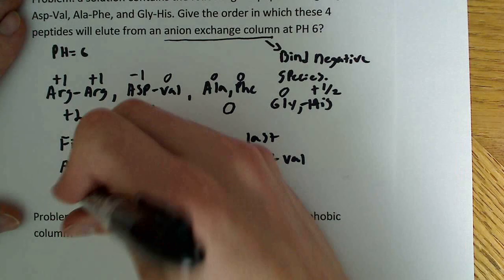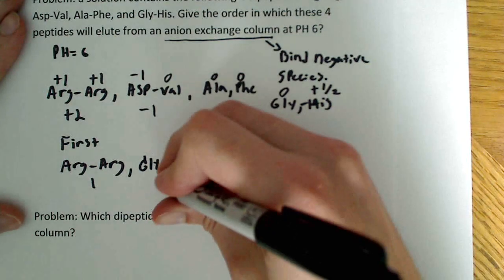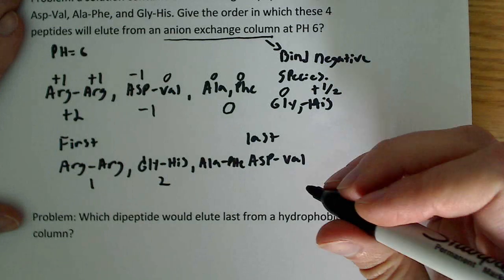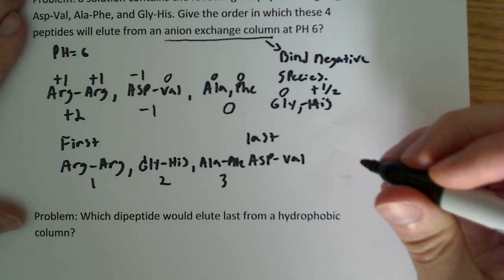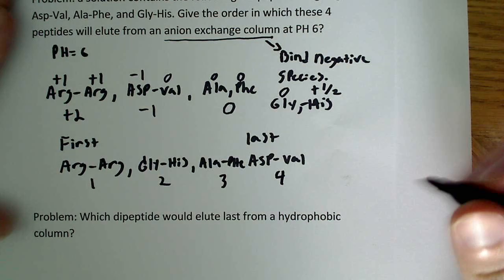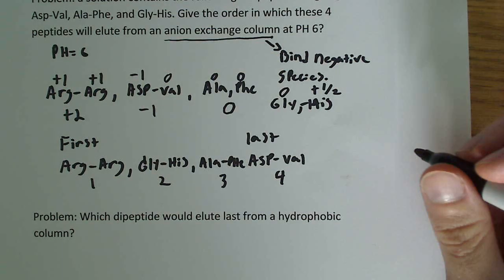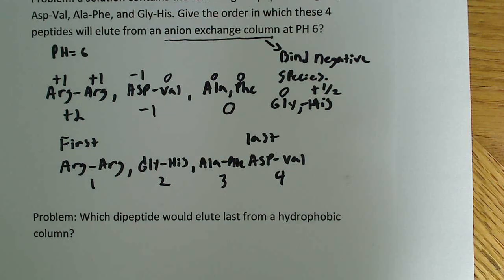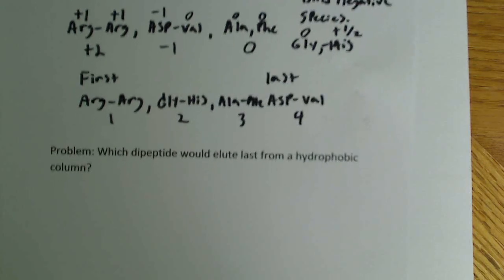And that's it, that's pretty much the whole problem. First, arginine-arginine, glycine-histidine second, third alanine-phenylalanine, and fourth aspartic acid and valine. And you're done with the first problem.